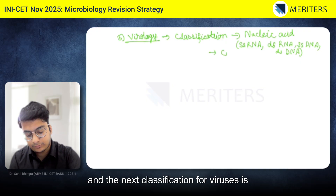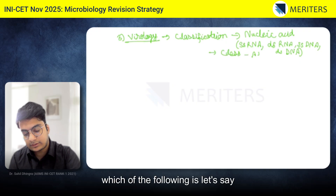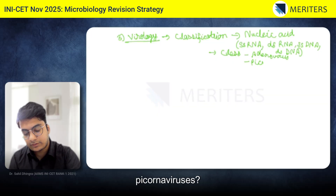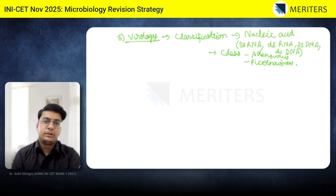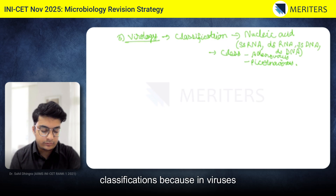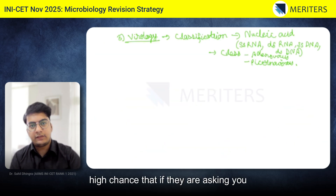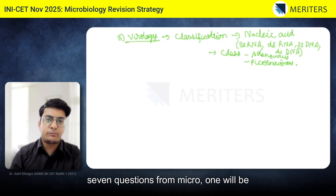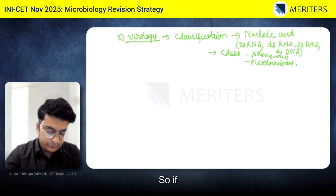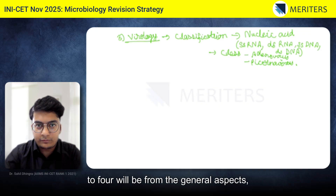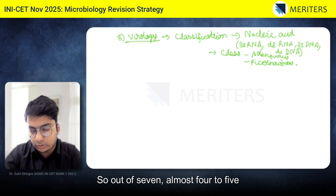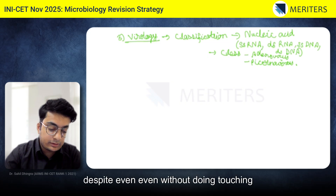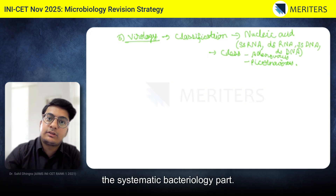The next classification for viruses is based on class — for example, which belongs to adenovirus or picornavirus. This classification is not as important as the first one, but ideally you should try to do both. In viruses, there is a high chance that if seven questions come from micro, one will be from viruses. So out of seven, almost four to five questions are already covered without even touching systematic bacteriology.